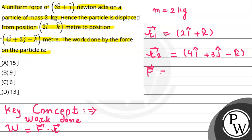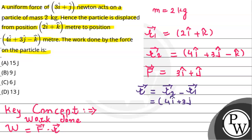As per the equation, the force vector is given to us as 3 hat I plus hat J in Newtons. We are going to calculate the displacement vector. The displacement vector R can be given as the final position vector minus the initial position vector. So this will be equal to R2, which is 4 hat I plus 3 hat J minus hat K.